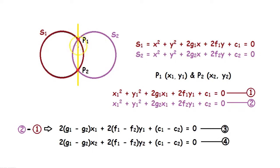We will take the two intersecting points of these two circles as P1(x₁,y₁) and P2(x₂,y₂). The common chord is the line passing through the points P1 and P2.